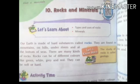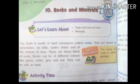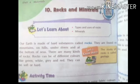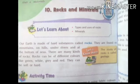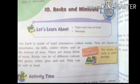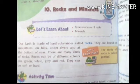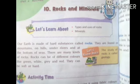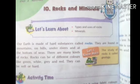Rocks are made up of minerals like lead, iron, graphite, diamond, and gold. We use many things made up of minerals in our daily lives. For example, graphite is used to make pencil lead that we use to write.